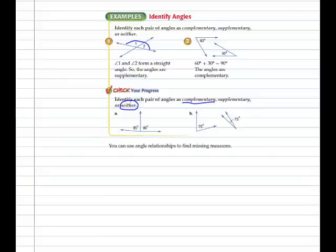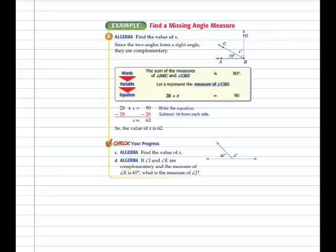You can use these relationships to find missing measures. Find the value of X. You can see that this is a right angle. Therefore, Angle ABC plus Angle CBD, when added together, equal 90 degrees. We know ABC; we don't know CBD. We can solve algebraically by undoing what's been done to the variable. We then arrive at a measure of 62 degrees for angle X.